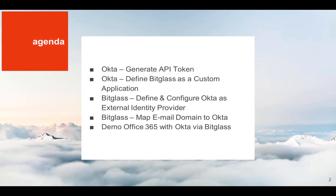Brief review of the agenda. First, we'll configure an API token using the Okta admin console. Next, we'll use the Okta application template to define the settings for Bitglass. Moving along, we'll mirror the setup in Bitglass by creating an external identity provider that points to Okta. We'll then map the newly created external identity provider to a Bitglass email domain. Before demonstrating how everything looks when it's all put together, since the authentication process is pretty fast, we'll take a few minutes to review things step by step. Then we'll log in to Office 365 using the joint Bitglass and Okta solution and give a quick demonstration of some of the features of Bitglass data protection.